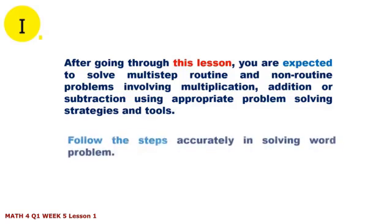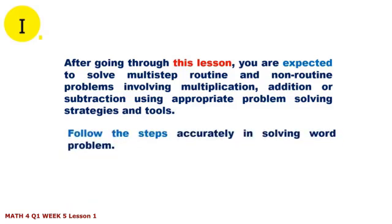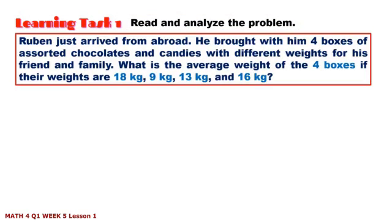Follow the steps accurately in solving word problems. Learning Task 1: Read and analyze the problem. Ruben just arrived from abroad. He brought with him four boxes of assorted chocolates and candies with different weights for his friends and family. What is the average weight of the four boxes if their weights are 18 kg, 9 kg, 13 kg, and 16 kg?